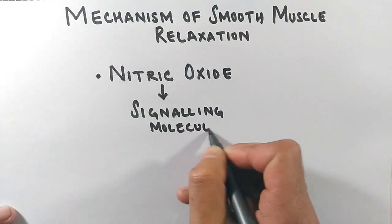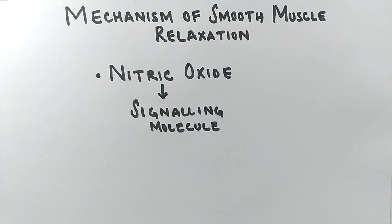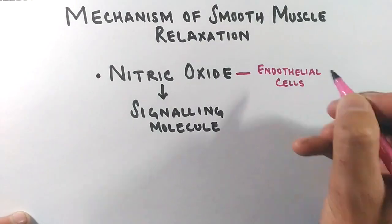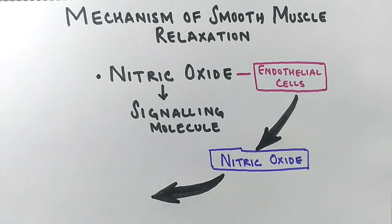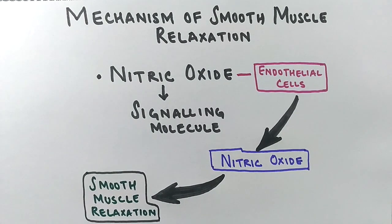For relaxation, there are certain molecules like nitric oxide that acts as a signaling molecule. This nitric oxide is an endogenous molecule produced by our endothelial cells, and this nitric oxide jumps into smooth muscle cells where it causes the relaxation of smooth muscles.